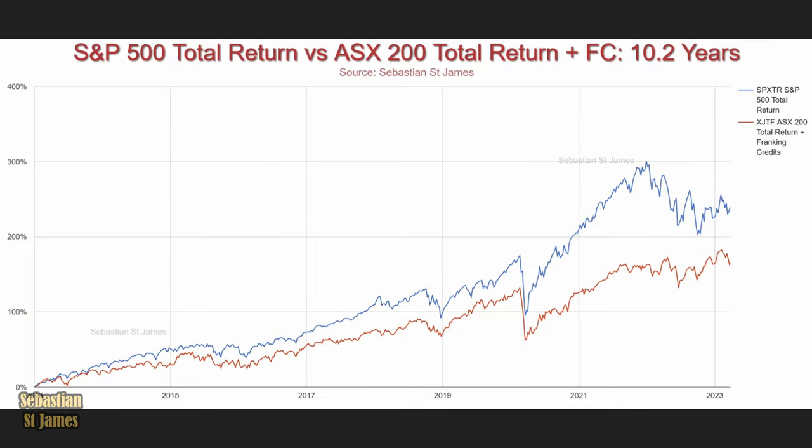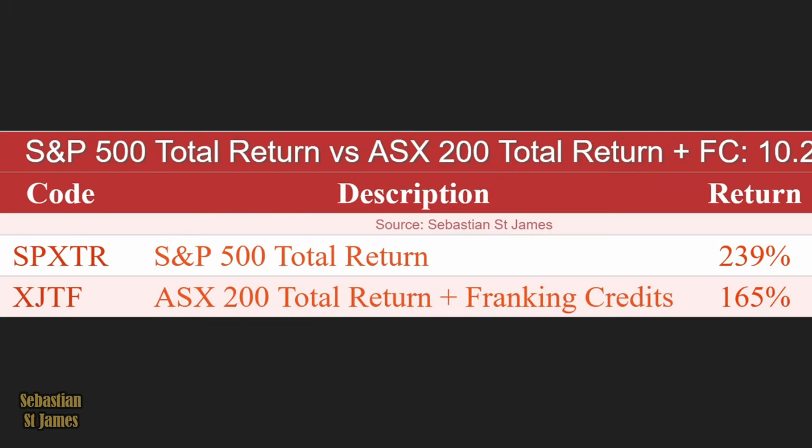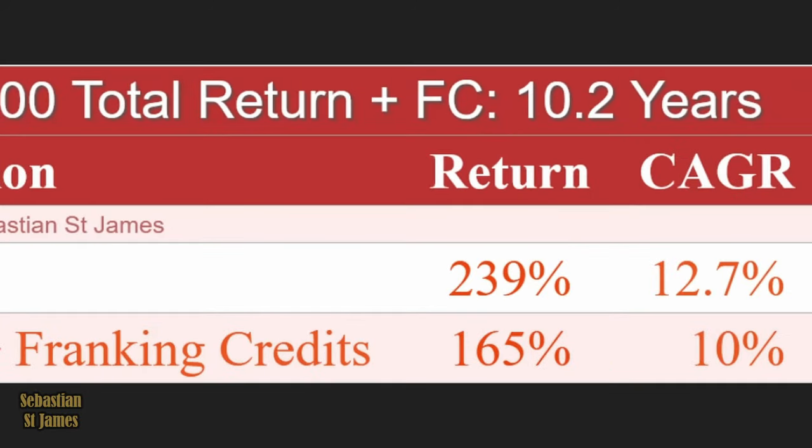Over 10.2 years, the S&P 500 has had a return of 239%. The ASX200 with franking credits and dividends is 165% — a big difference. The CAGR for America is 10.7% and Australia is 10%. Both are very good, but clearly America is higher.